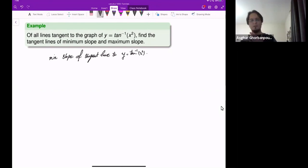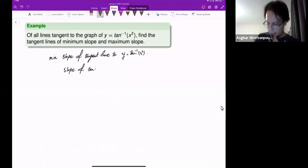What is the slope of the tangent lines? We know that the slope of a tangent line at x is equal to y prime, so we want to find the derivative.